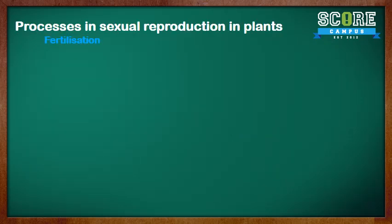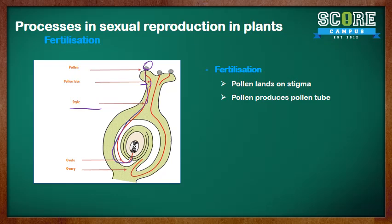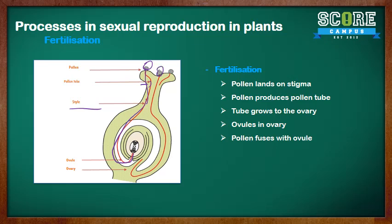Moving on to fertilization. When the pollen lands on the stigma, it produces a pollen tube. This pollen tube grows through the style to the ovary and connects to the ovules. When the pollen fuses with the ovule, fertilization happens. Both the male and female reproductive parts are required: the pollen is the male part, and the ovules are the female part. Only then can fertilization happen.